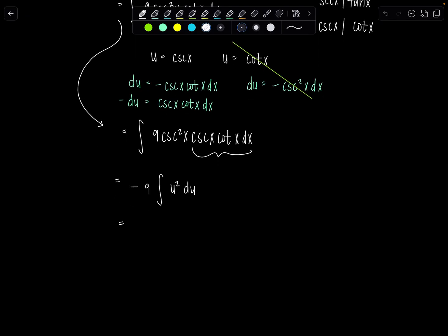And then from here, we can take the antiderivative easy peasy. Add one to the exponent. Divide by the new exponent. We have negative nine thirds u cubed plus c, which is negative three cosecant cubed x plus c. And we are done.